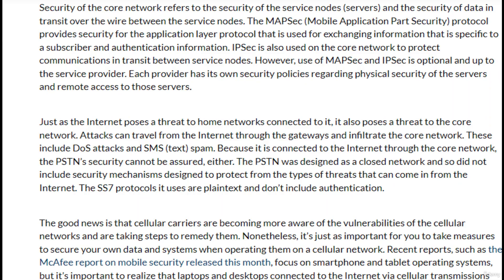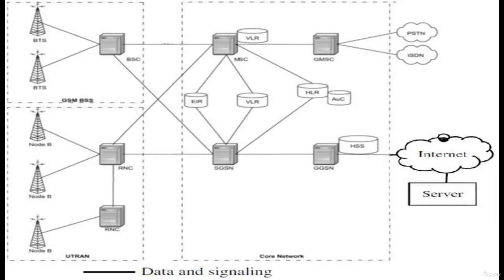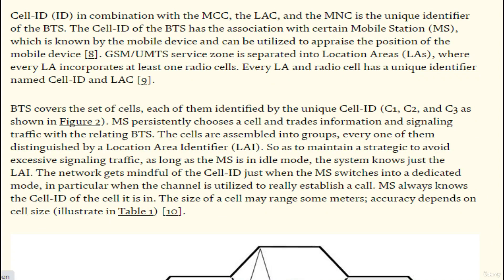Carriers are taking steps to address these vulnerabilities remotely. Nonetheless, it is just as important for you to take measures to secure your own data and systems when operating on a cellular network. Recent reports, such as the McAfee report on mobile security released this month, focus on smartphone and tablet operating systems, but it's important to realize that laptops and desktops connected to the internet via cellular transmission are also affected.